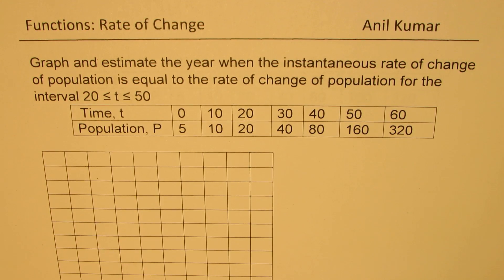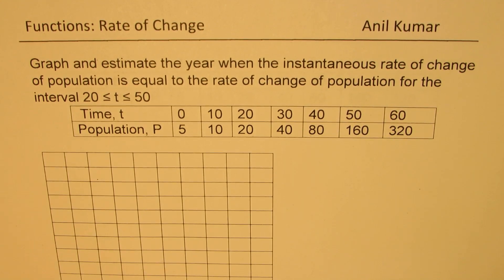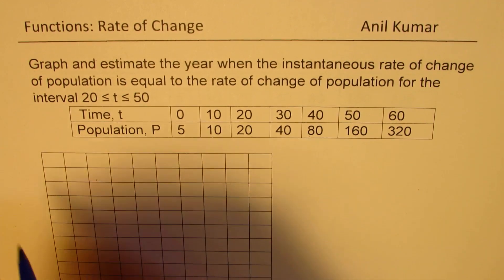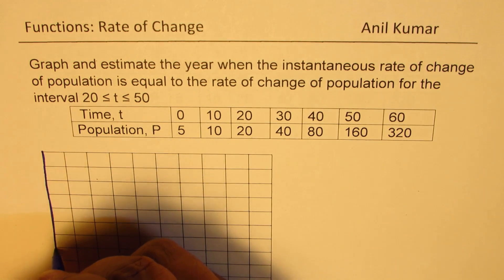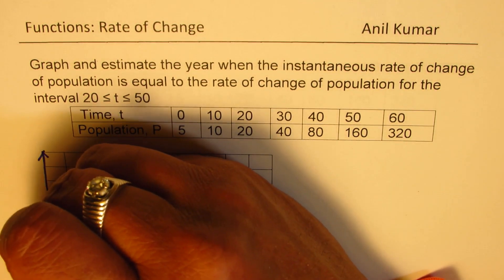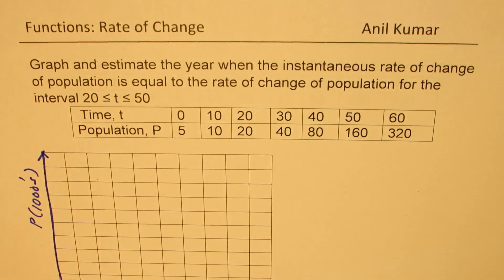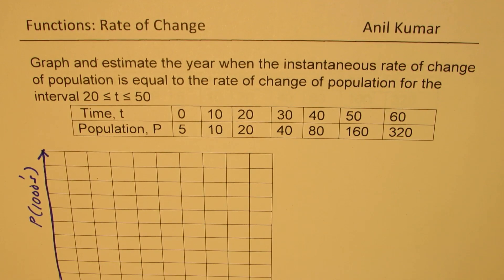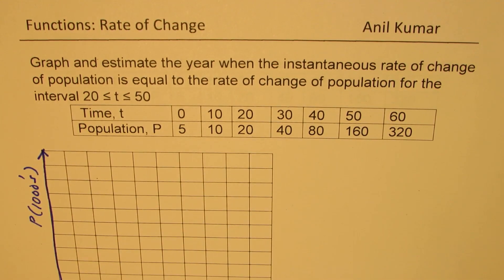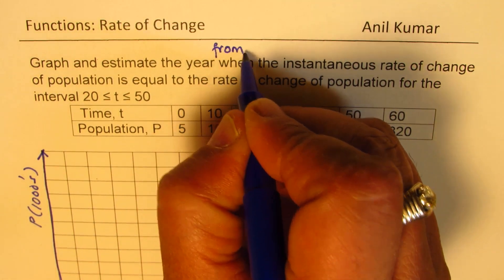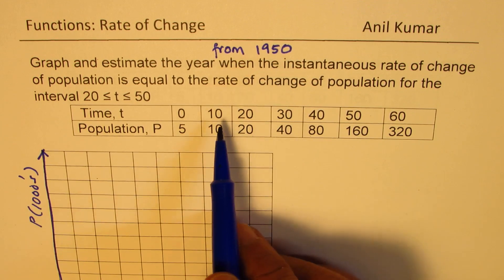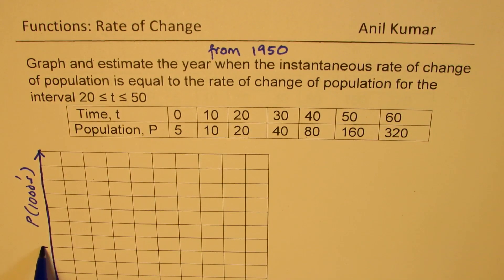Now let's look into sketching the graph of this particular function. We'll take population on the vertical axis — population P is in thousands. On the horizontal axis is time T. T equals 0 corresponds to the year 1950, T equals 10 is 1960, and so on. Let this be our time axis.